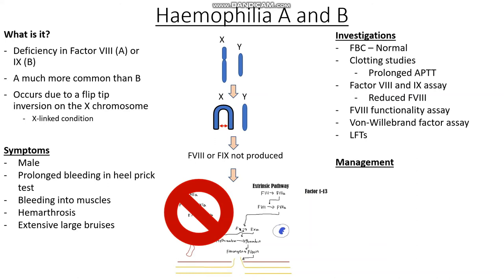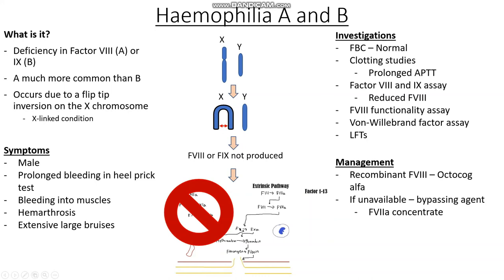For management, since haemophilia is a deficiency of Factor VIII or Factor IX, the best approach is to replace those factors. In haemophilia A, we use recombinant Factor VIII, also called Octocog Alpha. In acute scenarios where recombinant Factor VIII is unavailable, we can bypass the intrinsic pathway by giving activated Factor VIIa concentrate to help produce more fibrin via the extrinsic pathway. We can also give an antifibrinolytic such as tranexamic acid — so whatever clot we have isn't broken down as easily. Additionally, desmopressin can be given to force more Factor VIII from endothelial cells into circulation.